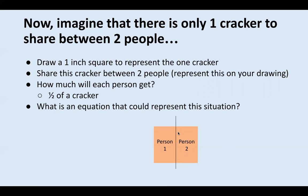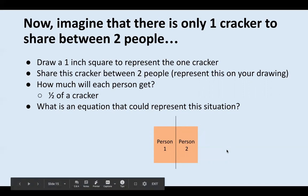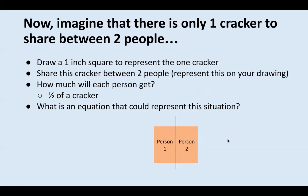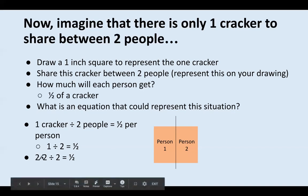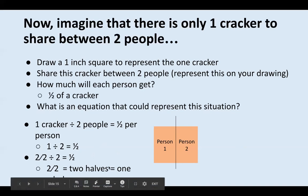What is our equation that represents this situation? Just like last time, write down the equation you think represents sharing this one cracker between two people equally. Hopefully you wrote something like: one cracker divided by two people equals one half per person, or one divided by two equals one half. I want to challenge you for a second — how could I make this equation look like the equations we just finished? I could also say that two over two divided by two equals one half, because two over two is the exact same thing as one whole.